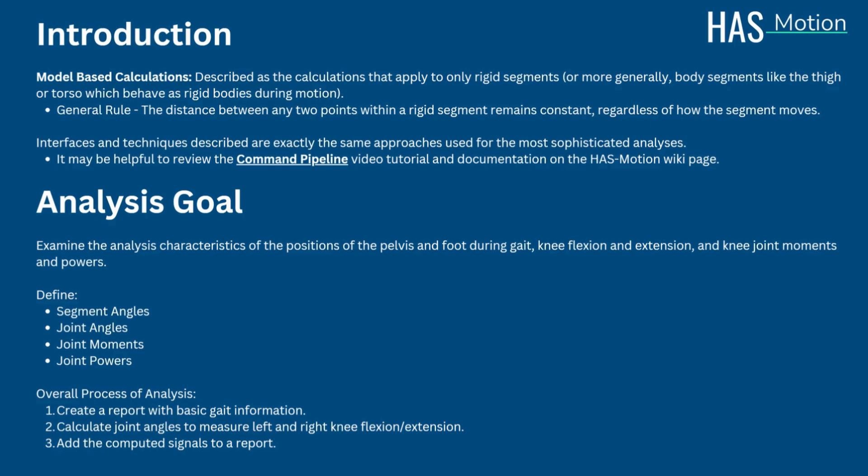To do this, we will define segment angles, joint angles, joint moments, and joint powers. We will also be reporting on basic attributes such as stride length and other fundamental gait characteristics. The overall process of the analysis will go as follows.